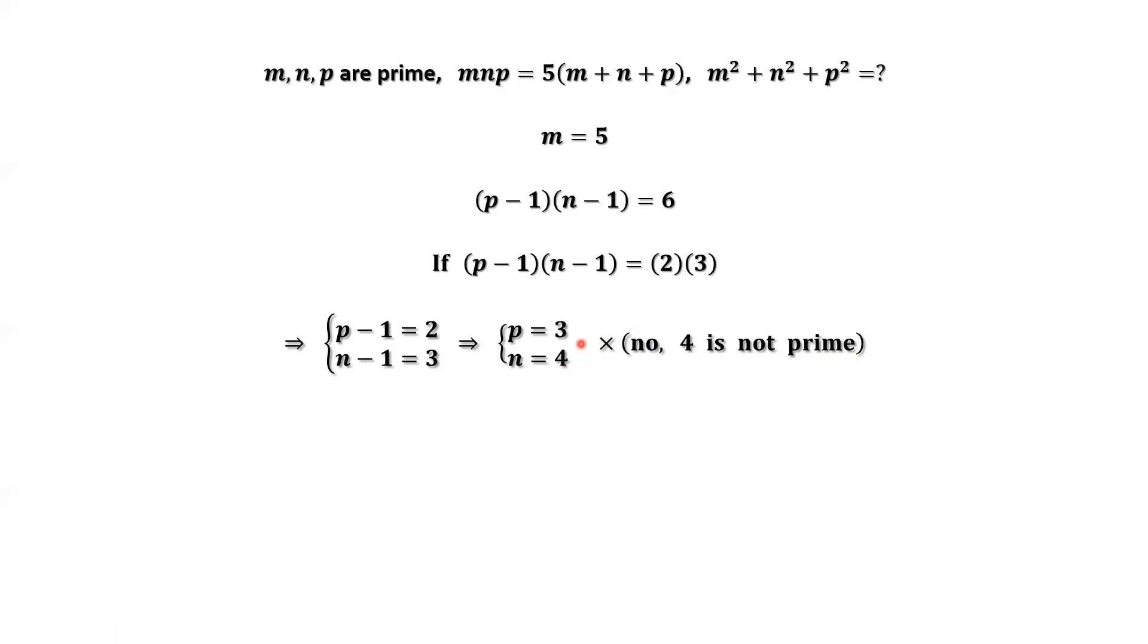Similarly, we can switch the order to 3, 2. That means p minus 1 equals 3, n minus 1 is 2. Then we have p equals 4, n equals 3. p equals 4 is not prime, so this is not the answer.